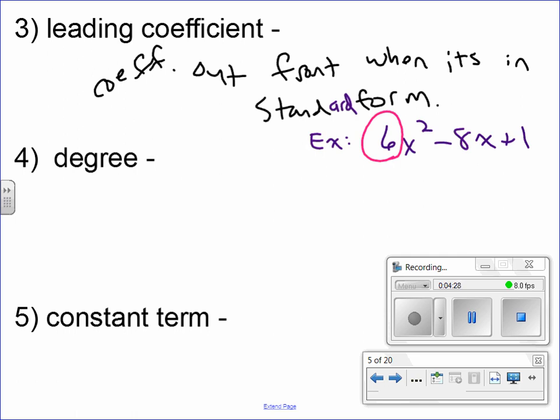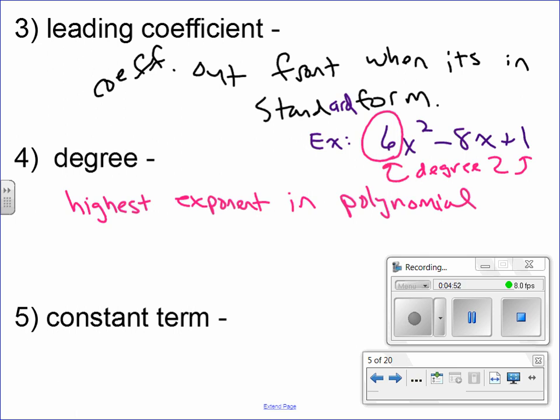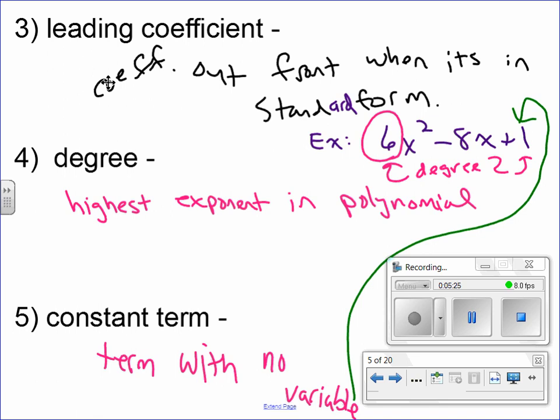The degree is the highest exponent in the polynomial. On this particular one, it's a degree two polynomial. And then the constant term is the term with no variable. In that case, one is called the constant term. One is the constant, six is the leading coefficient, and it's degree two.